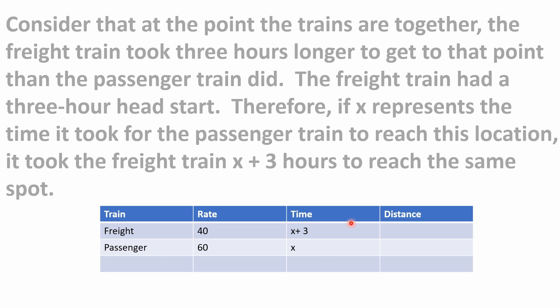Since the freight train left three hours earlier, the amount of time it took the freight train to get there would be x plus 3 hours. I've set up a table here, which is a good way to approach a problem like this — if you don't break it down into smaller pieces it can seem overwhelming. The table has columns for the train, the rate of travel (speed), the time, and the distance, which we don't know yet.